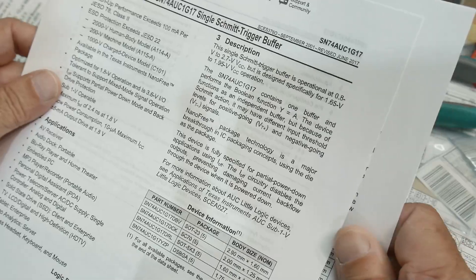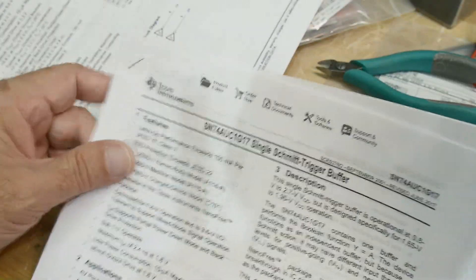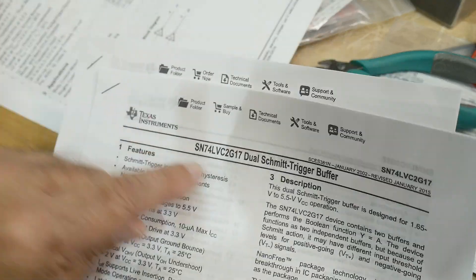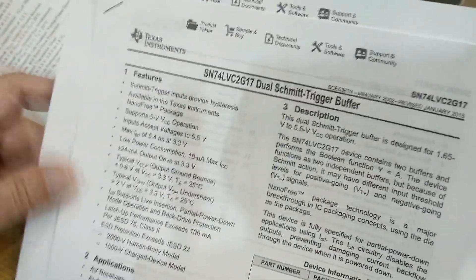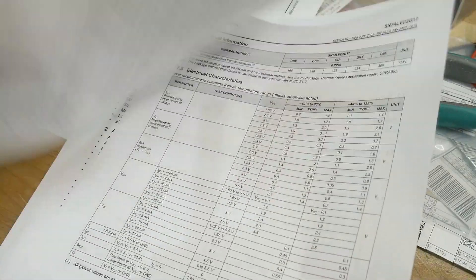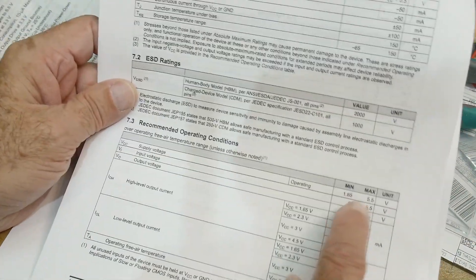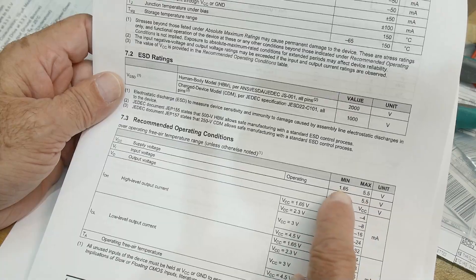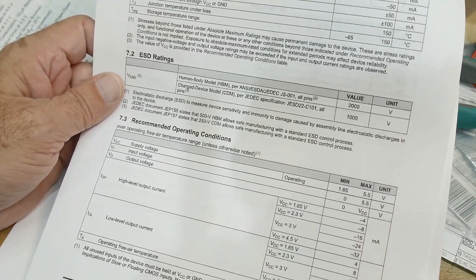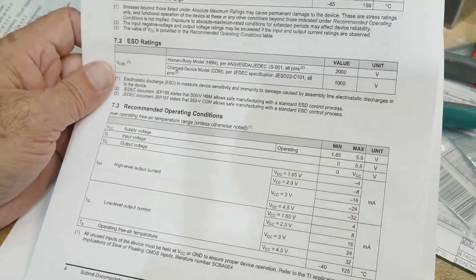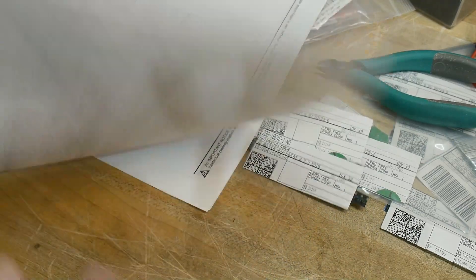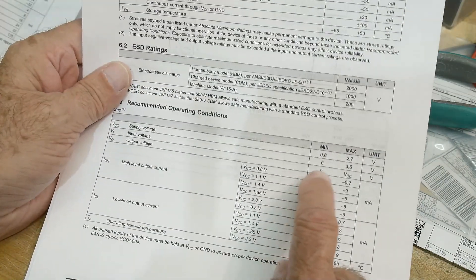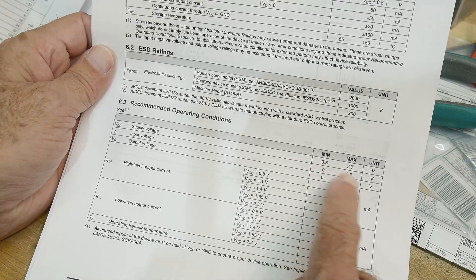So these also have different letters on the front. This one is an AUC, this one is an LVC, low voltage CMOS. So this part is good for up to 5 volt operation. Typically you use these at 3.3, but the datasheet says you can use them anywhere from 1.65 to 5.5. So they're 5 volt logic usable, so that's great. Pretty healthy currents on the output. The other one is a lower voltage.